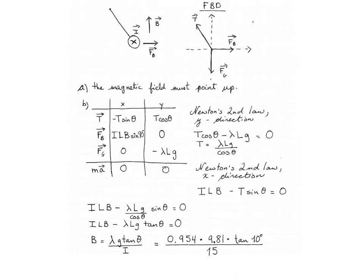we get 0.954 kilograms per meter multiplied by 9.8 Newtons per kilogram times tan theta divided by 15 Amperes. And that gives us a magnetic field of 0.110 Tesla.